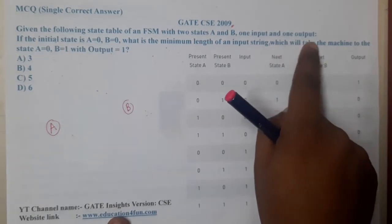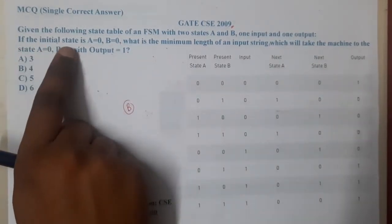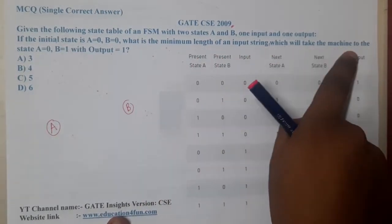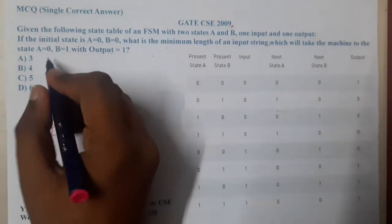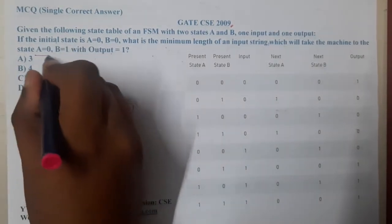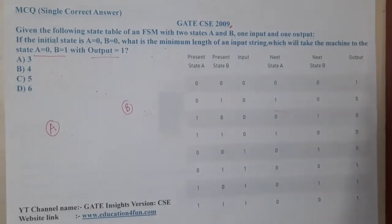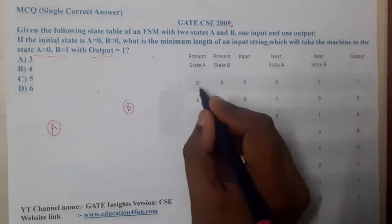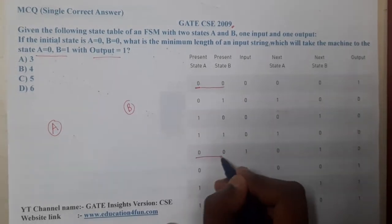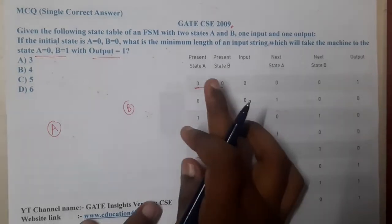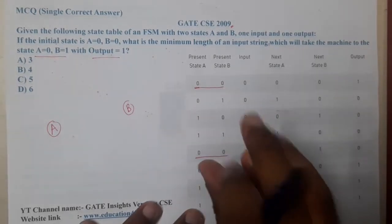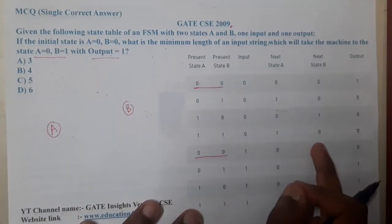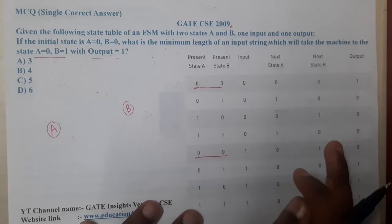If the initial state is (0,0), what is the minimum length of an input string which will take the machine to state (0,1) with output 1? So we need to start at state (0,0) and end at (0,1) with output 1.